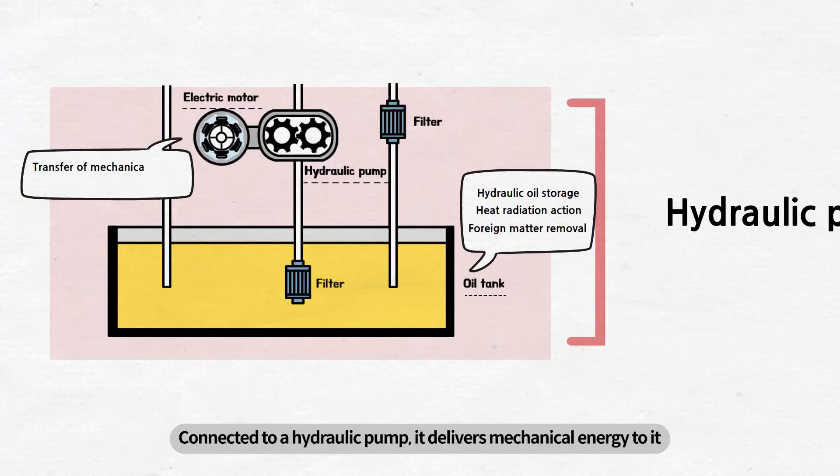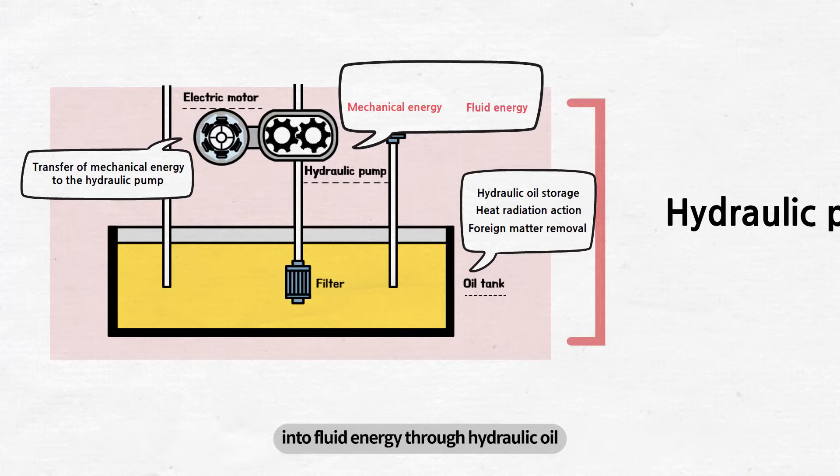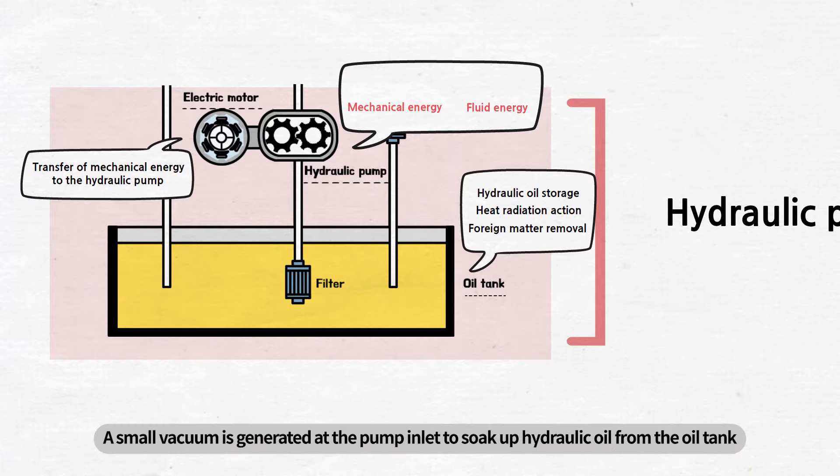A hydraulic pump is what converts mechanical energy supplied by an electric motor into fluid energy through hydraulic oil. A small vacuum is generated at the pump inlet to soak up hydraulic oil from the oil tank, while generating high-pressure oil using the rotational motion of the internal components.